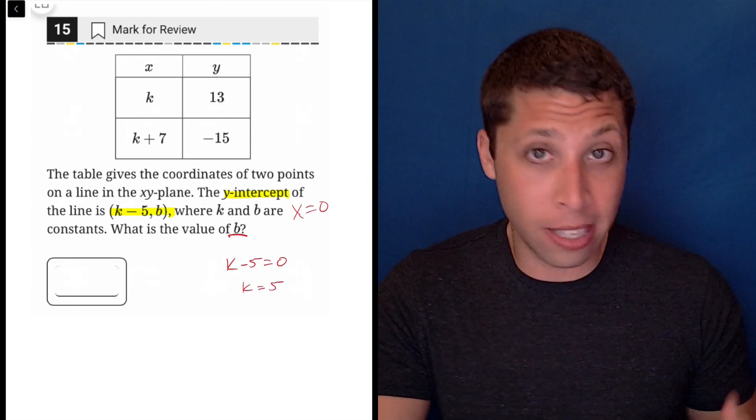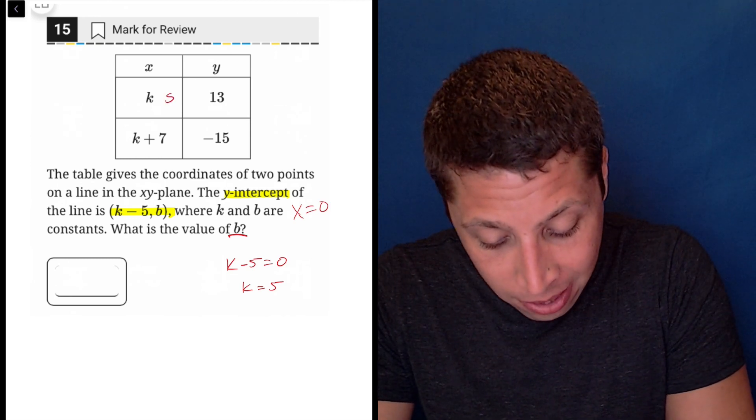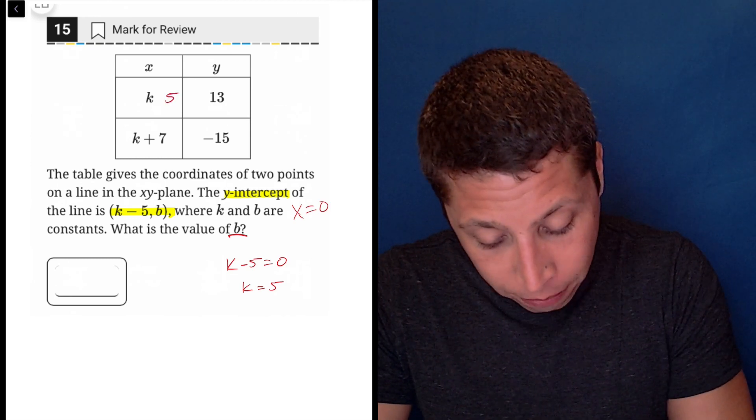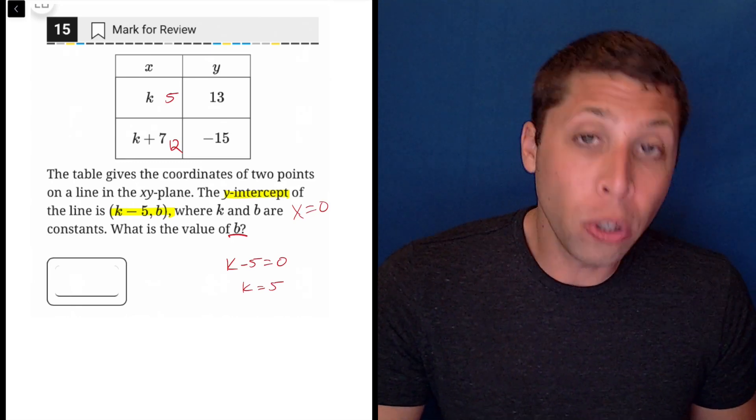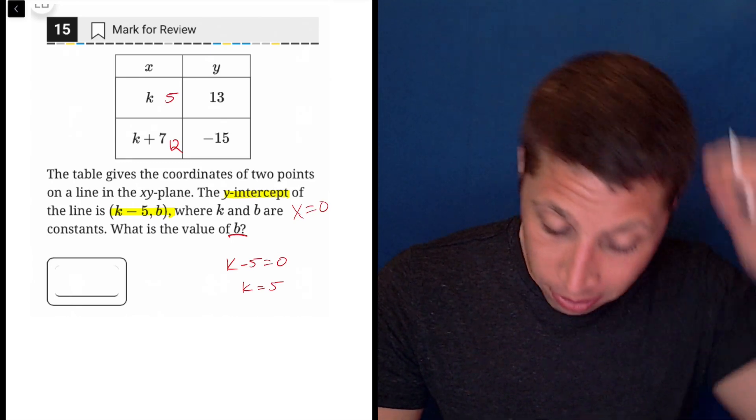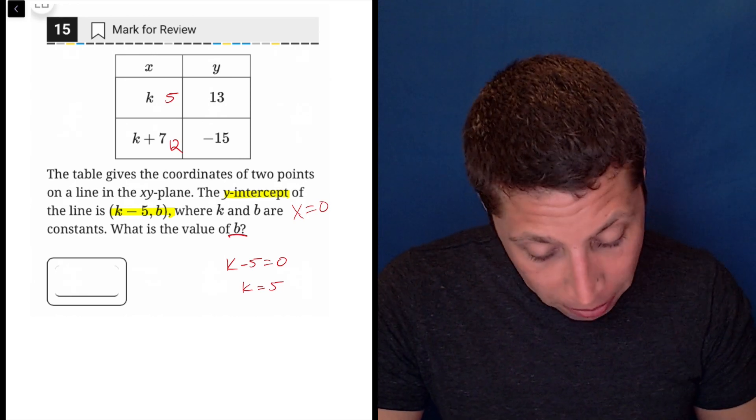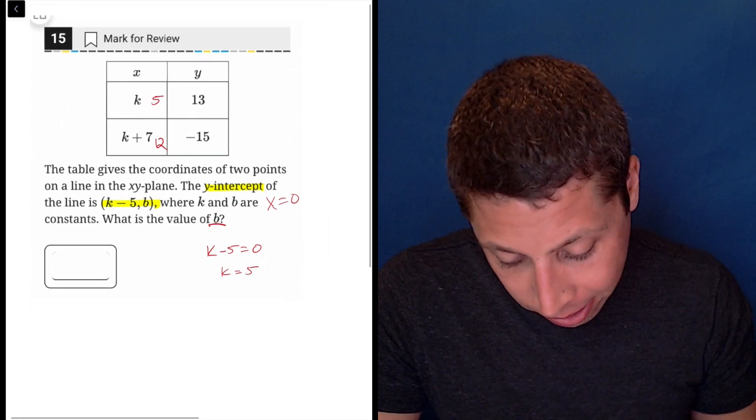So suddenly this chart is much more readable, right? These are the points: 5, 13 and 5 plus 7 is 12, so 12, negative 15. At this point you could use those two points to find the slope. I guess that's probably the best way to do it actually, now that I think about it. So let's just do that.